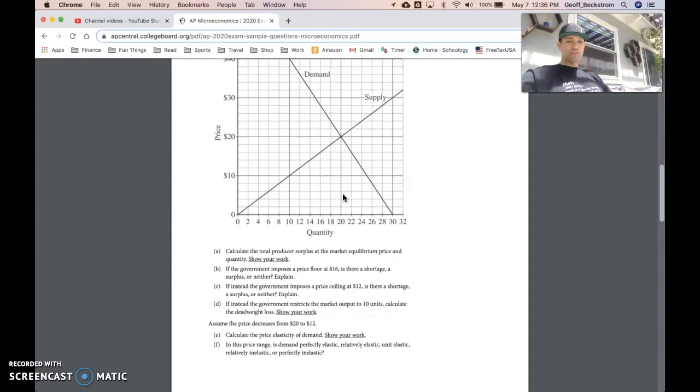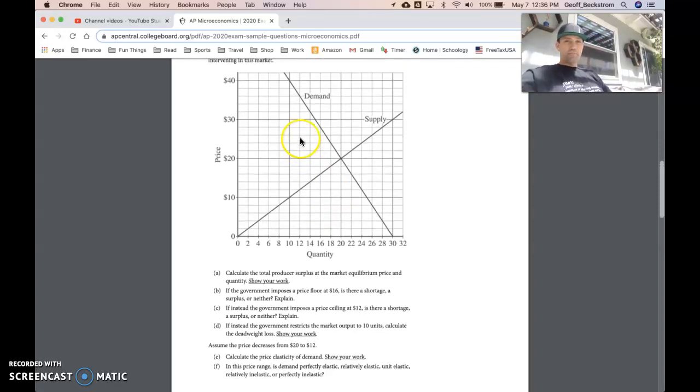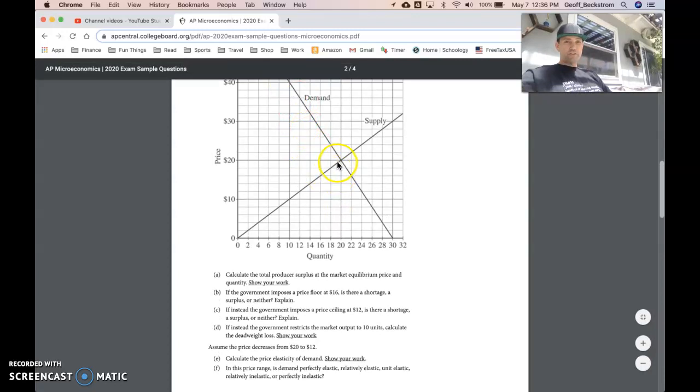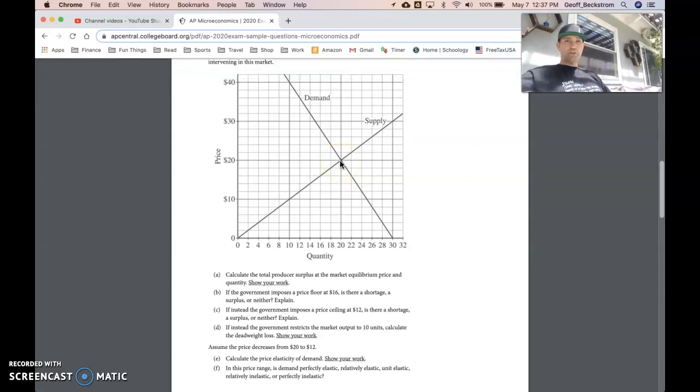Assume the price decreases from 20 to 12. Calculate the price elasticity of demand and show your work. So on the demand curve, if the price goes from 20 down to 12, what we see is this section. So this section of demand, it wants the arc elasticity of demand, the price elasticity of demand over this section of demand curve right here. Remember, for elasticity calculations, you need to put quantity change, percent quantity change over percent price change.